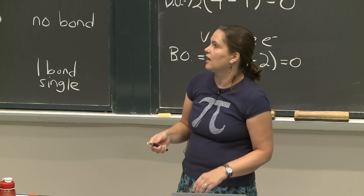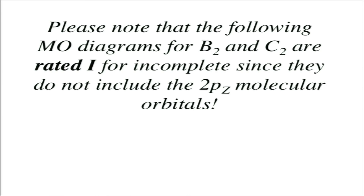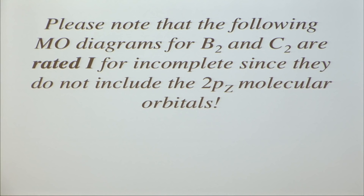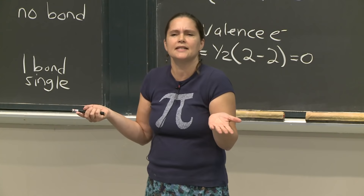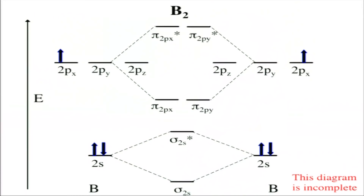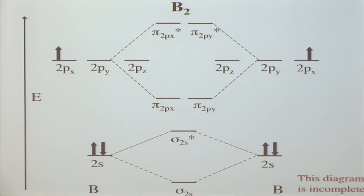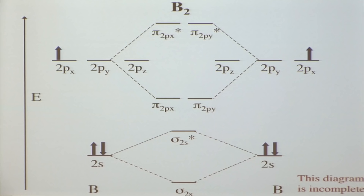These diagrams for px and py are rated incomplete—the 2pz orbital is not yet included. On a test, you must always include the molecular orbitals derived from 2pz, even if they're empty. We're starting simple and building complexity. For now we'll only include the px and py interactions, then add the third.